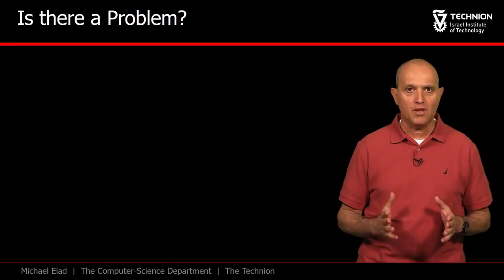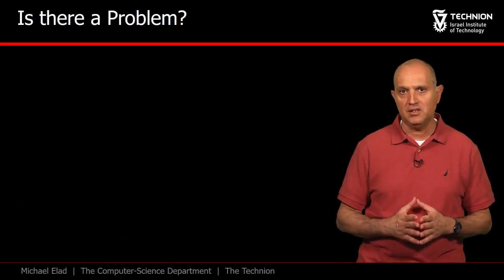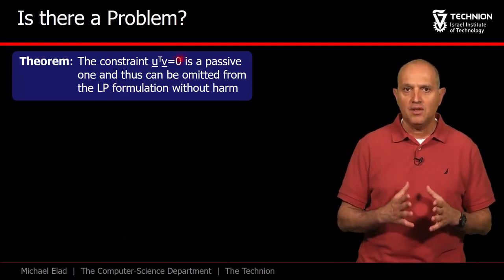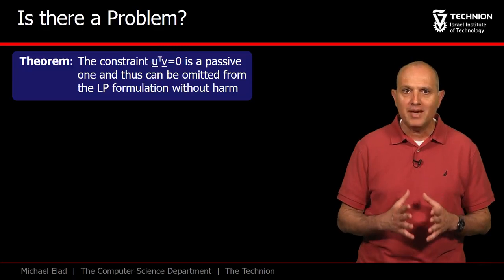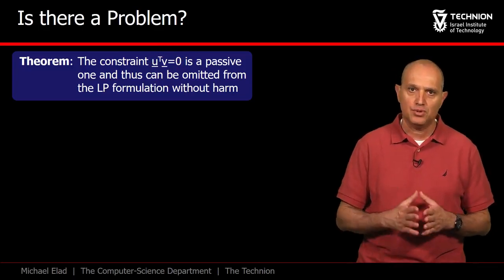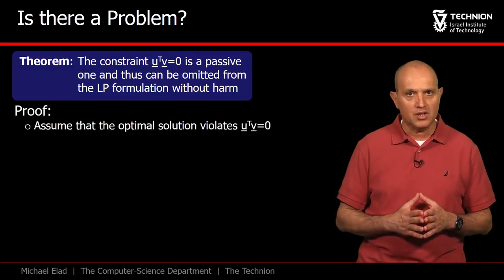As we are about to show, the last requirement is not really needed. Here is a theorem stating that this orthogonality constraint is a passive constraint. This implies that with or without it, we get the same solution. Let's turn to prove this claim.